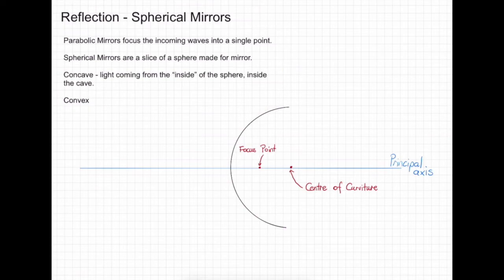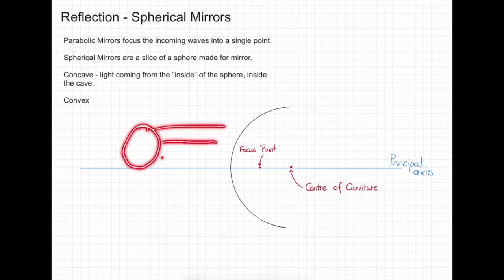A convex mirror has light coming from the outside of the sphere, so we have our source out here, where it shines onto the outside of the sphere.